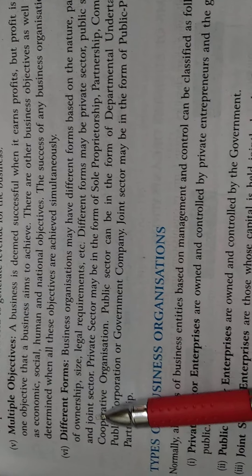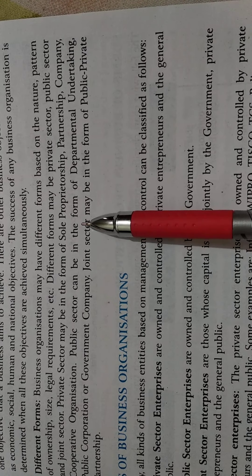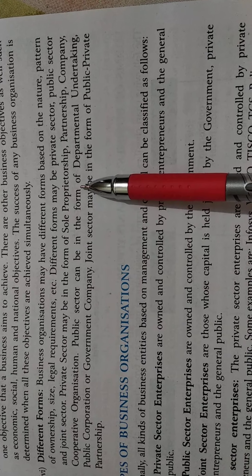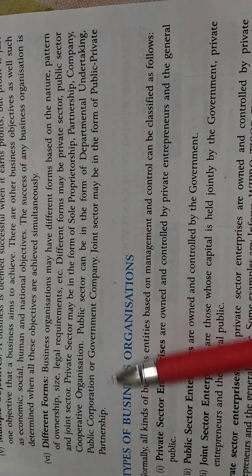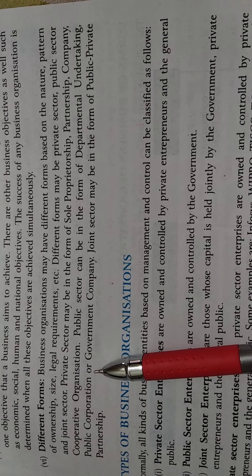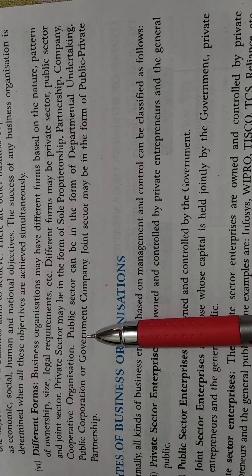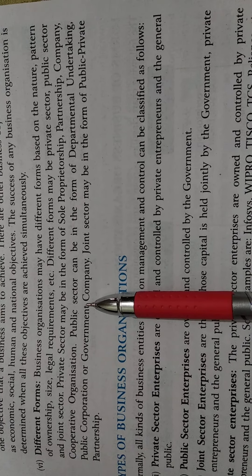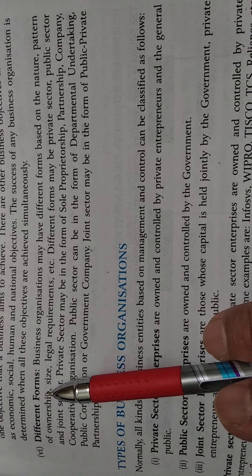Different forms of business include sole proprietorship, which we will study in the next chapter, as well as partnership, company, cooperative organization, private sector, public sector, and joint sector. These all are the different forms in business.